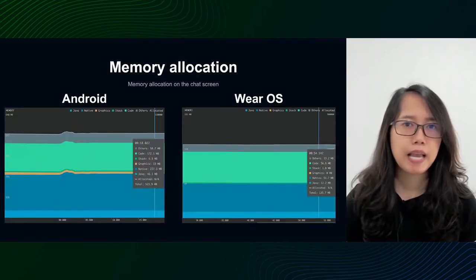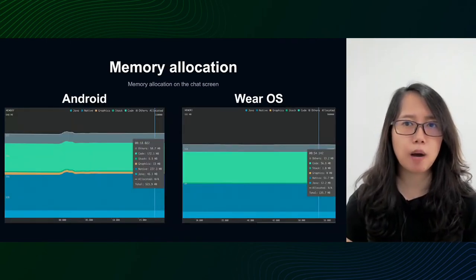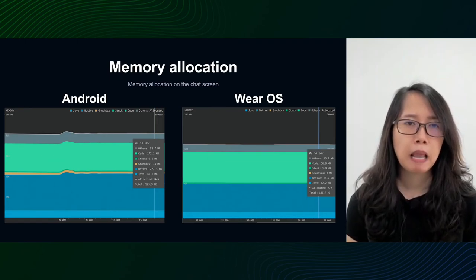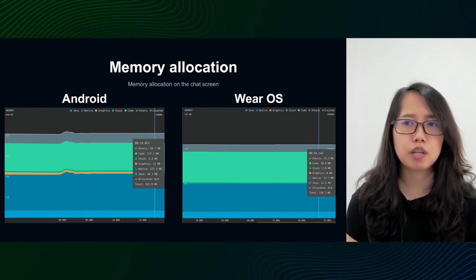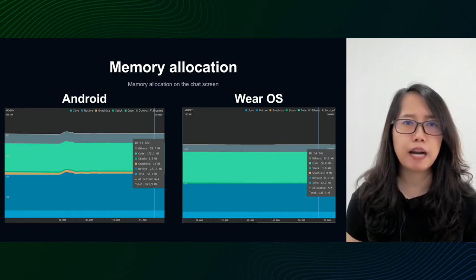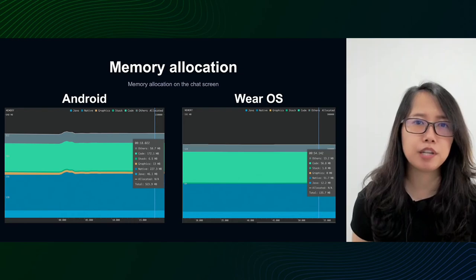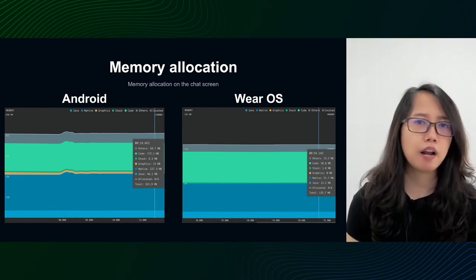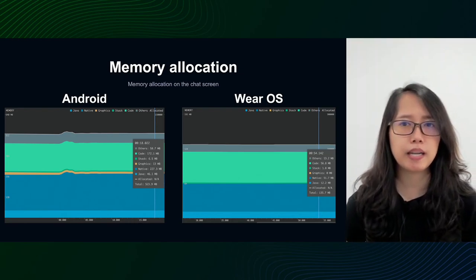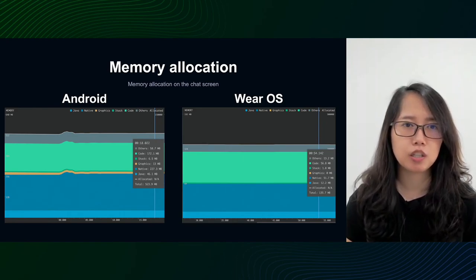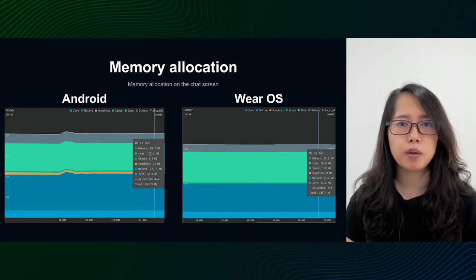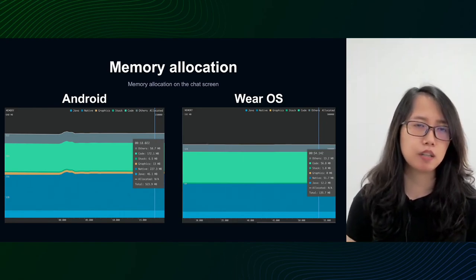After all these optimizations, let's see the memory allocation comparison of Live Messenger on Android versus WearOS. By applying several solutions, our WearOS version memory usage is nearly five times lower than the Android version.